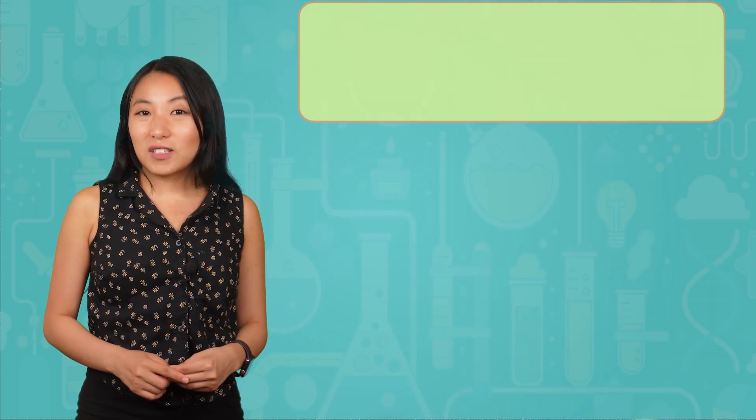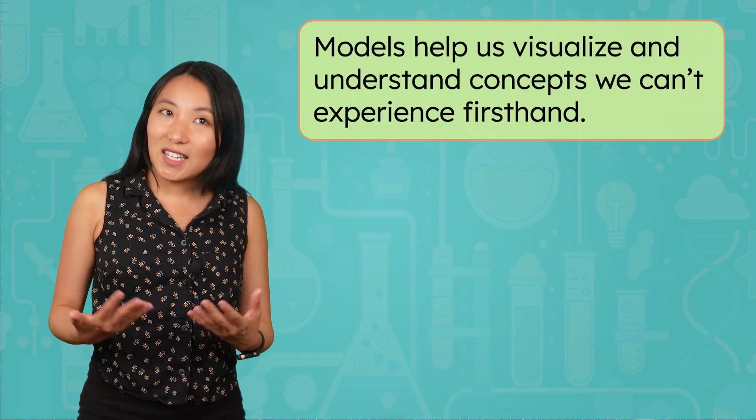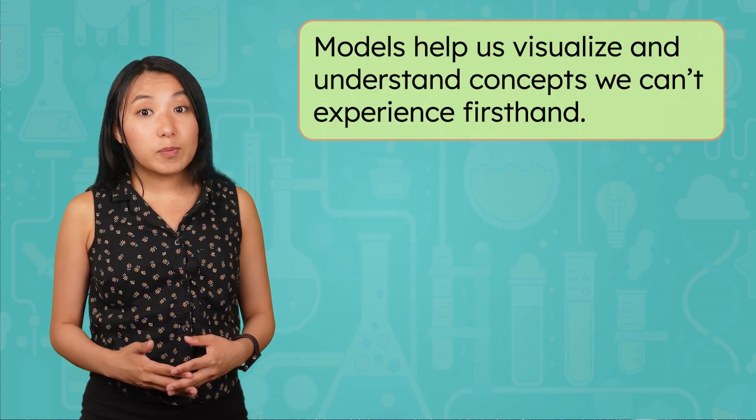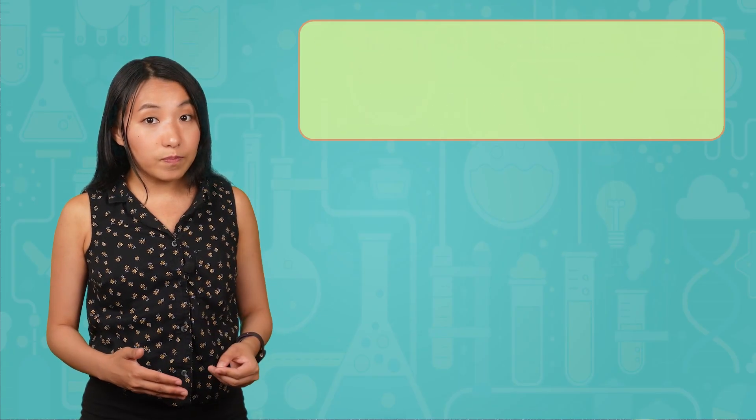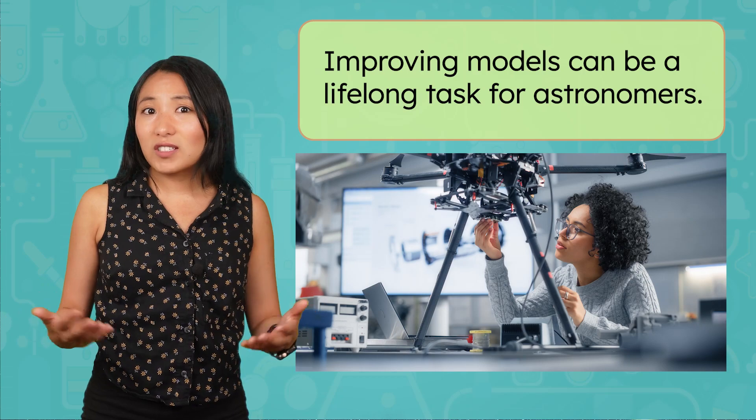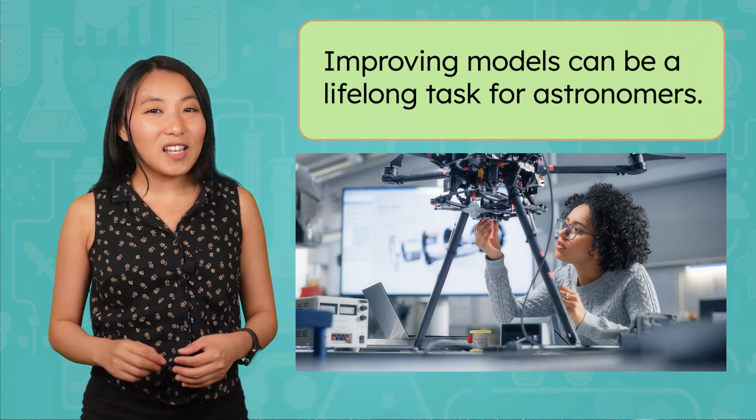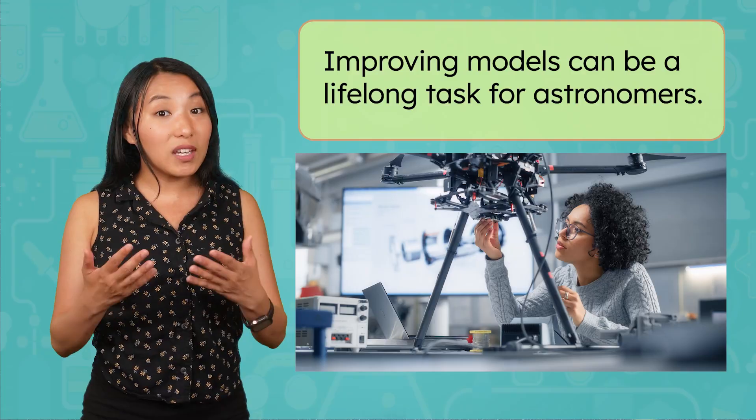In astronomy, we study things that are unimaginably large, incredibly far away, and impossible to experiment with directly. That's why models are so important. They help us visualize and understand concepts we can't experience first-hand. But no model is perfect, as we saw with our balloon model. Continuously improving the models we use can be a lifelong task for many astronomers. The better and more accurate the model is, the better information and insights we can gain from it.